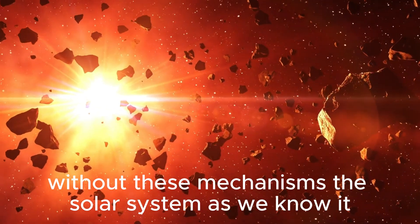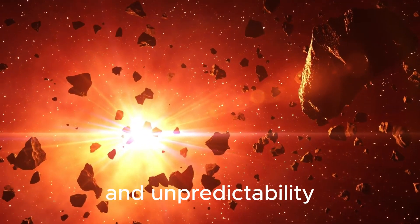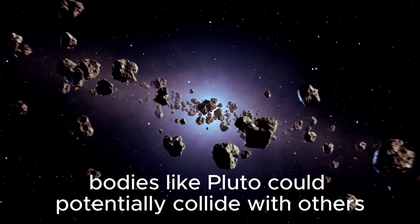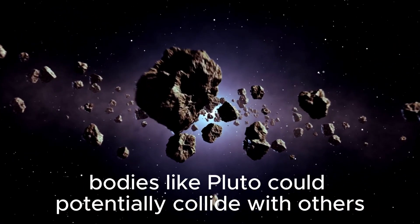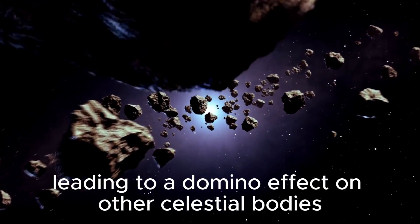Without these mechanisms, the solar system, as we know it, would be a place of much greater chaos and unpredictability. Bodies like Pluto could potentially collide with others or be ejected from their stable paths, leading to a domino effect on other celestial bodies.